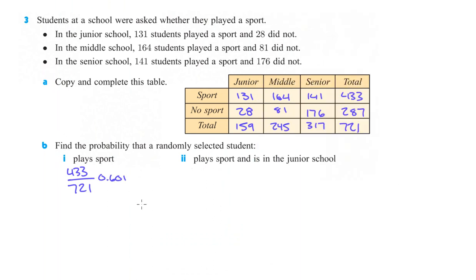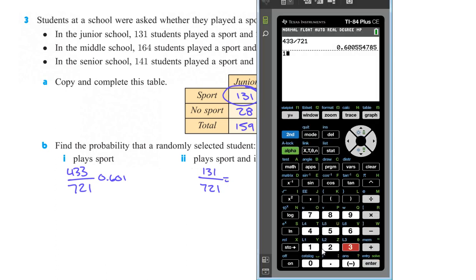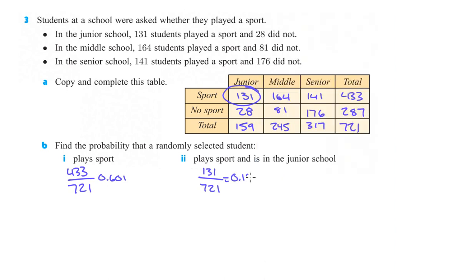Just about 60%, a little higher. Part 2 says: what's the probability that a randomly selected student plays a sport and is in the junior school? We're still selecting from the 721. So that would be 131 out of 721, and that gives us 0.182 — just over 18% on that one.